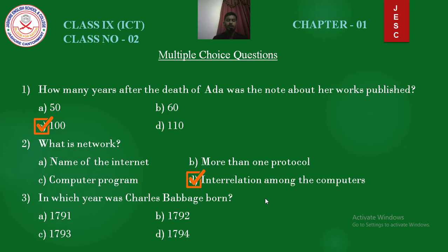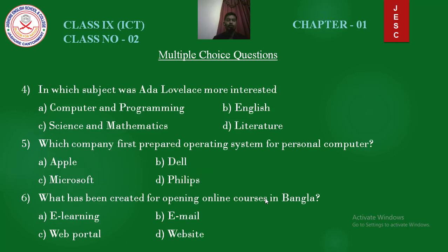Question number 3: In which year was Charles Babbage born? Options: 1791, 1792, 1793, 1794. Answer is 1791. Question number 4: In which subject was Ada Lovelace more interested? Options: computer and programming, English, science and mathematics, literature. Answer is science and mathematics.